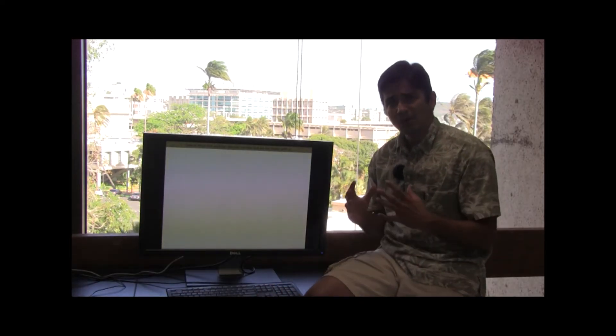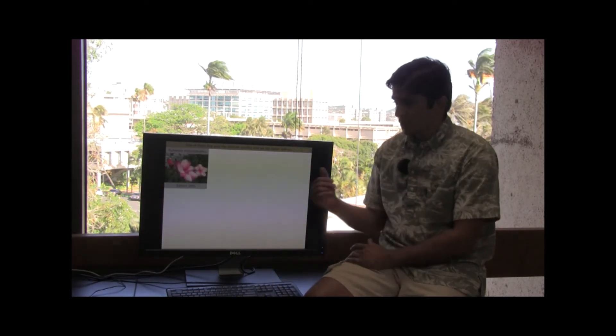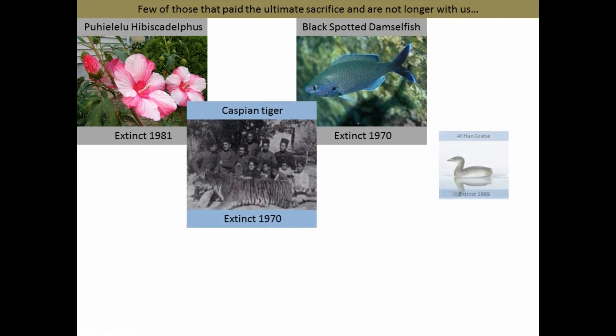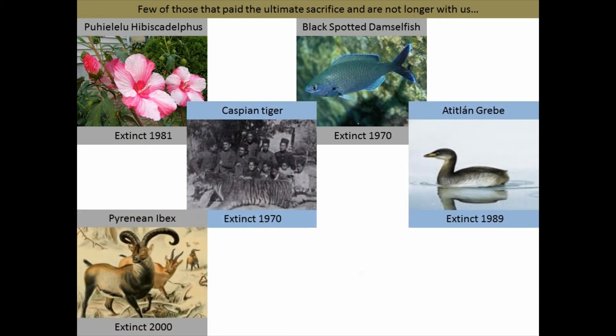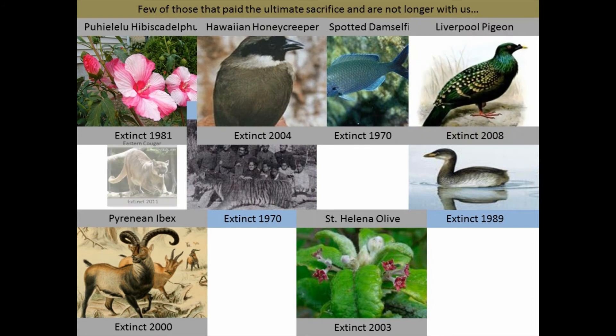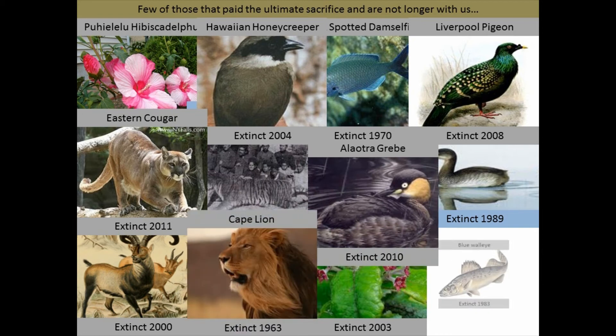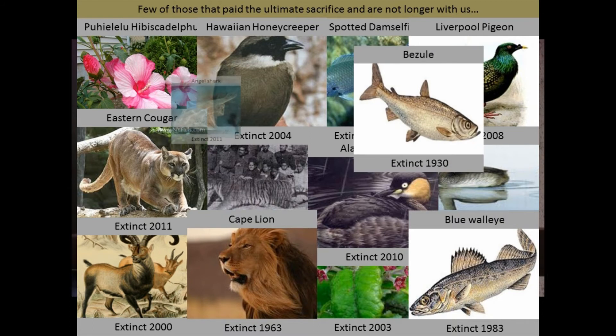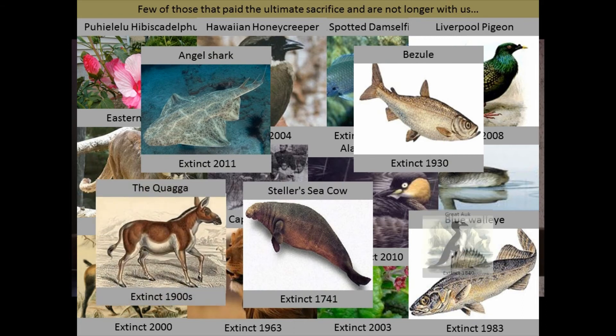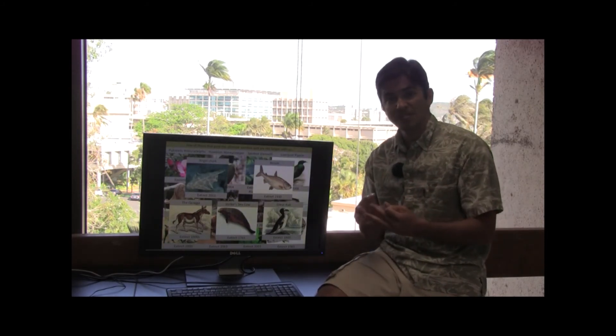Unfortunately, some species have already paid the ultimate consequences of these environmental impacts, which is extinction. And here, you can see some species that have gone extinct in very recent times. And just like that, there are over 27,000 species lost every year just as a result of deforestation. Now imagine the species that might be gone extinct as a result of overexploitation, invasive species and climate change.